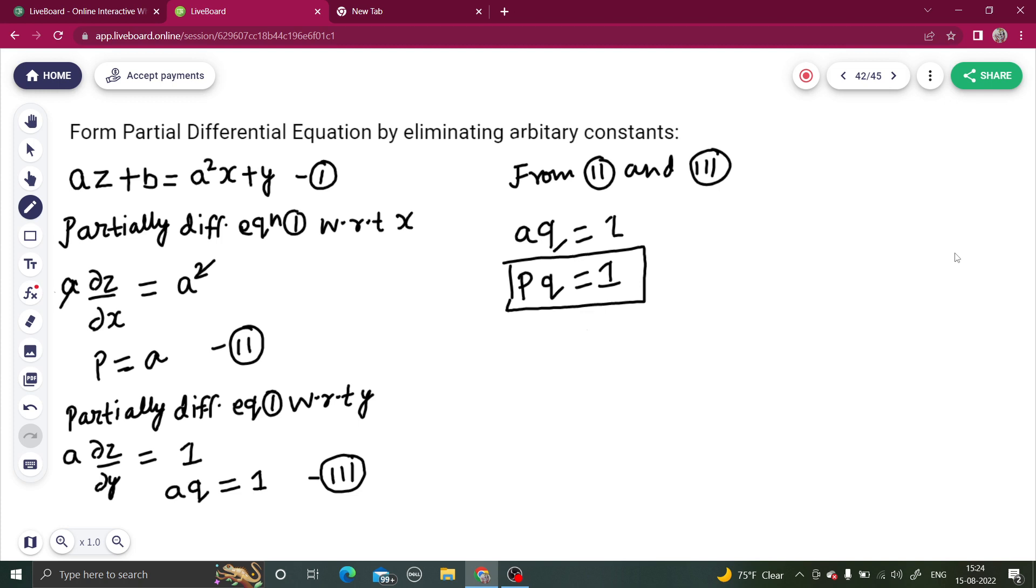So I hope you understood this. Steps were easy. But at the last moment it was important to understand that we are getting an equation from equation number 2 and 3 only. Because if you put the values back in equation number 1 it will be a bit hard to eliminate the value of b. But that is not the case when you use equation number 2 and 3. That way you are easily getting pq equals to 1 as your answer. So I hope you understood this. Thanks and have a nice day.